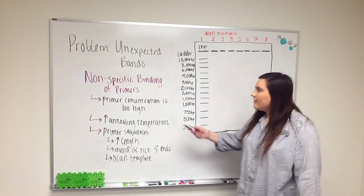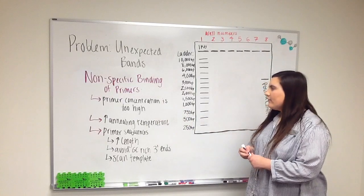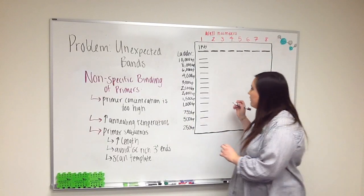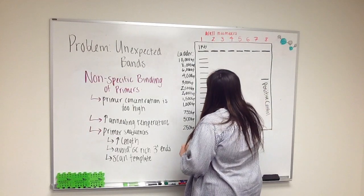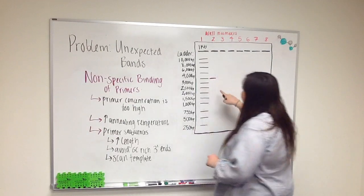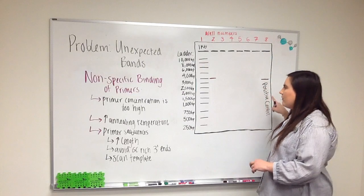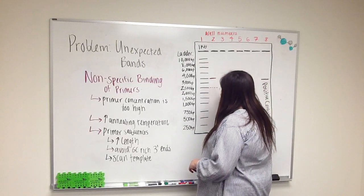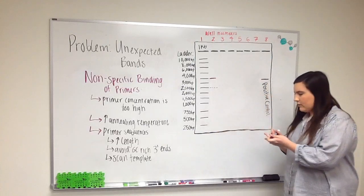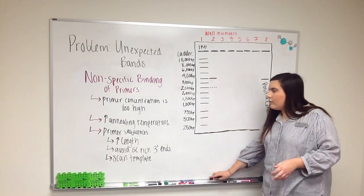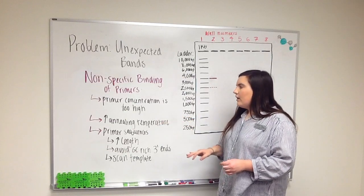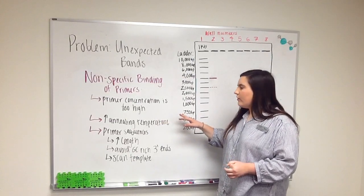The next issue we're going to be discussing is non-specific binding of primers. This could present itself as multiple things on the gels, but one way that it could present itself is that you might get your band that you expected at 4,000 base pairs, but you might also get a faint band at an alternate site. This could be because your primer concentration is too high and it's over-saturating your template. Optimize your primer concentration for the best results.